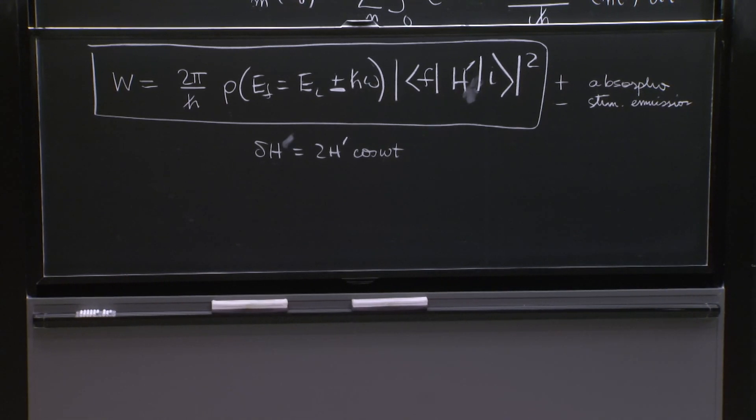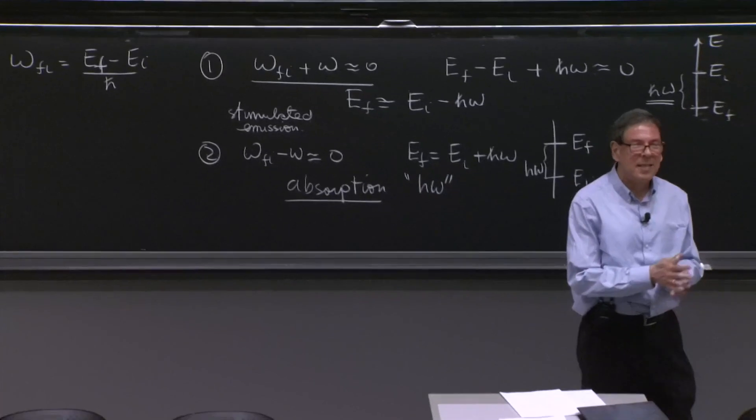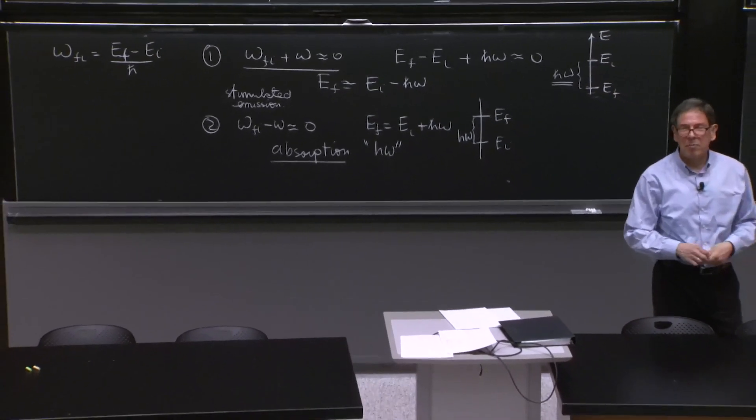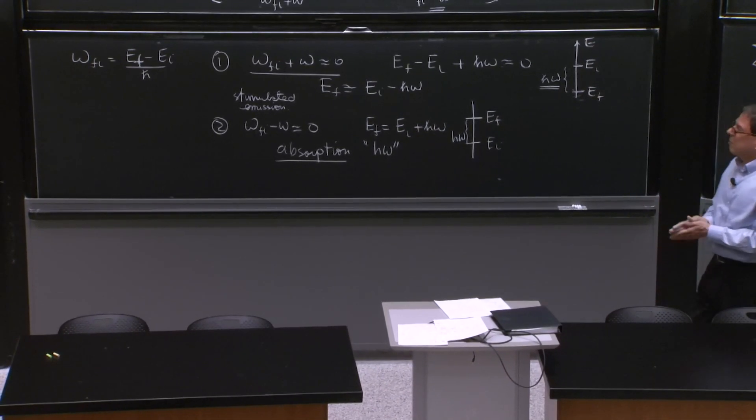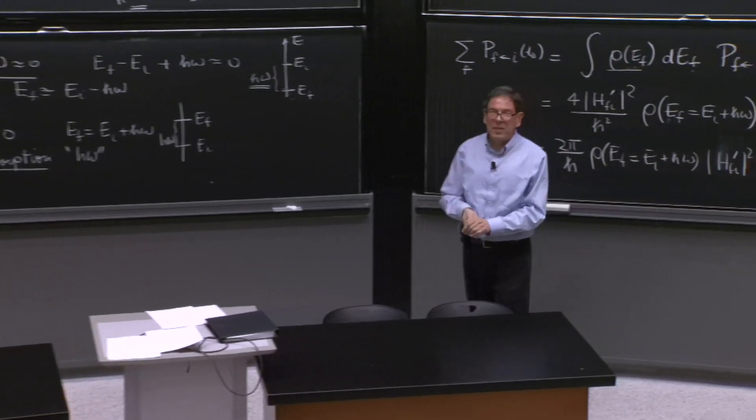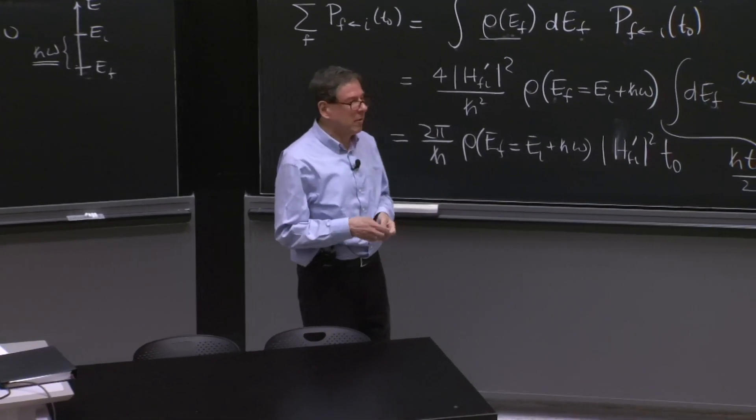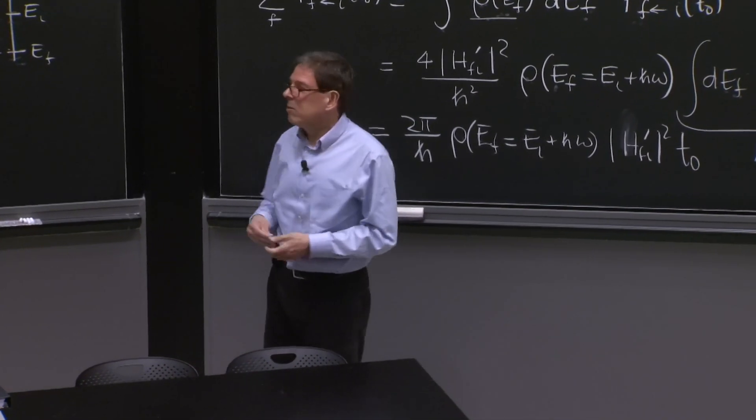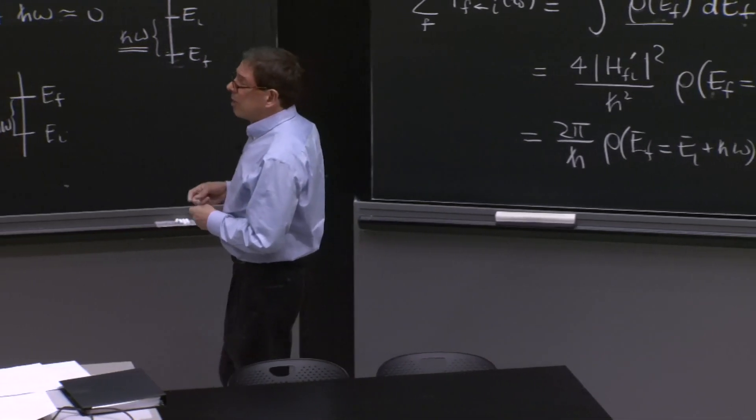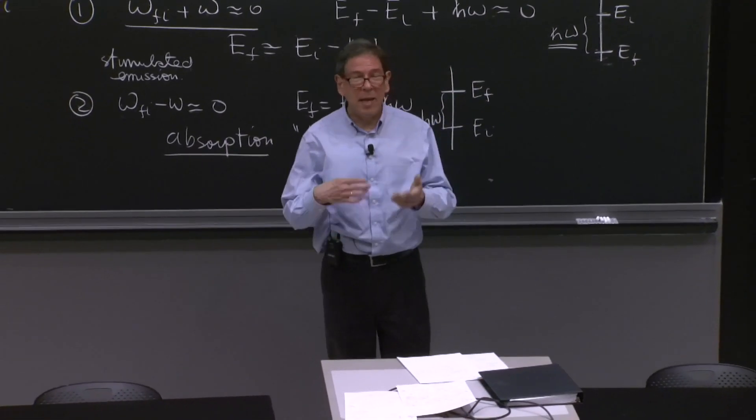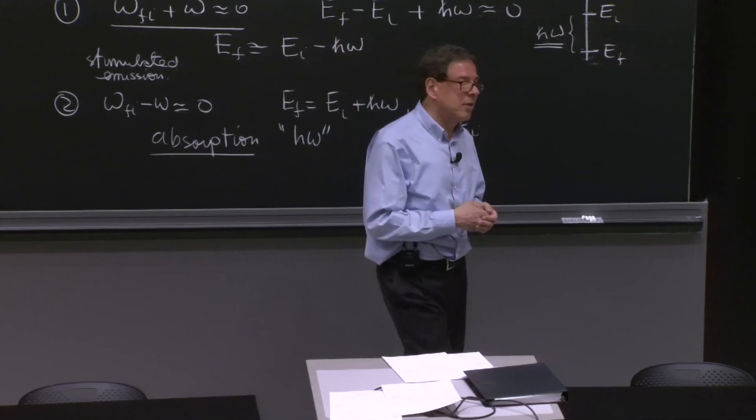So this is Fermi's golden rule. It's over. We've done it. We've done it basically for two cases, the constant perturbation and the harmonic perturbation. And there's a lot of physics here that we will be exploring starting now, but continuing with atoms and radiation in general, an atomic transition.